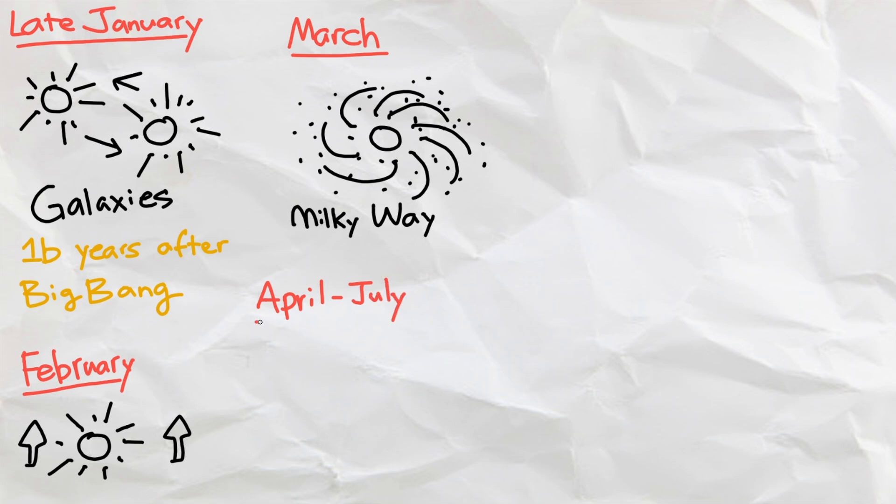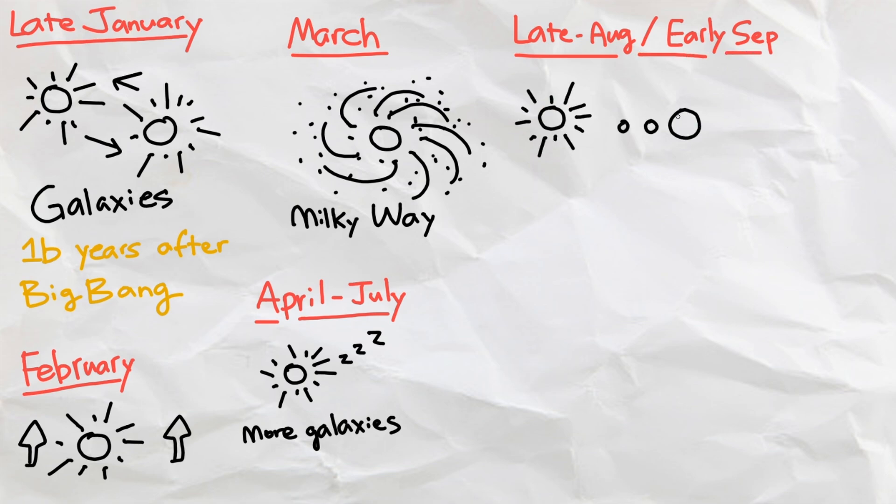Within an uneventful February of just more stars and galaxies popping up, March is when our Milky Way formed. And within an uneventful April, May, June, and July, our solar system, including our sun and Earth, formed sometime in late August or early September, which is still 4.5 billion years ago as we approach the last third of the cosmic calendar.